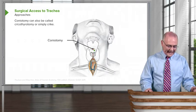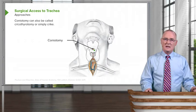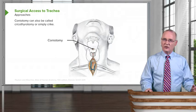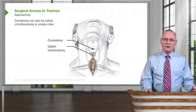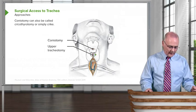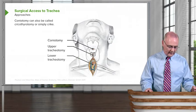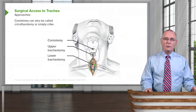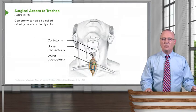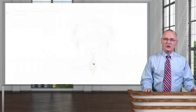One is a coniotomy, which goes by two alternate names: a cricothyrotomy, also referred to simply as a crike. Another approach is to perform an upper tracheotomy, which would be in this region here. And then the third approach would be to do a lower tracheotomy, shown in this region here. We will now explore each one of these with the approach taken.